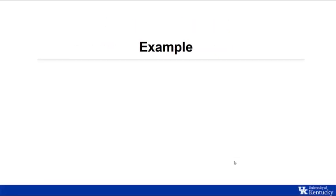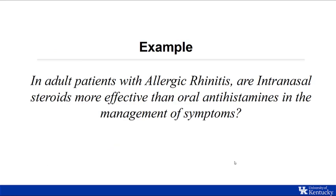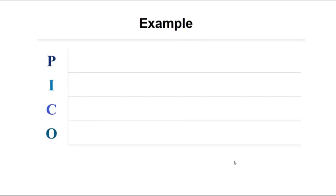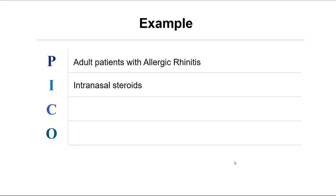Now let's look at an example. In adult patients with allergic rhinitis, are intranasal steroids more effective than oral antihistamines in the management of symptoms? Let us break down the question using PICO. Our population is adult patients with allergic rhinitis. The intervention we are looking at is intranasal steroids. Our comparison intervention is oral antihistamines. And our overall outcome — what we are hoping to achieve — is symptom management.